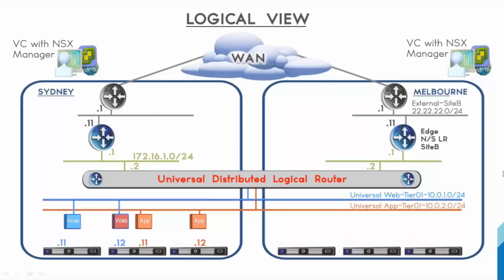Let's go through the topology from the bottom up. The virtual machines are connected to a universal logical switch, which is a switch that spans multiple sites, allowing applications to have an L2 adjacency. This is connected to the universal distributed logical router, or UDLR, which allows local egress optimization per site. In the event you move an application from site A to site B, the VM's default gateway will be local to that particular site, removing tromboning and suboptimal packet forwarding between machines.